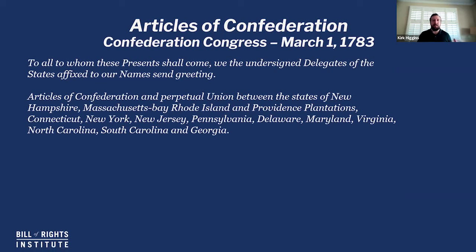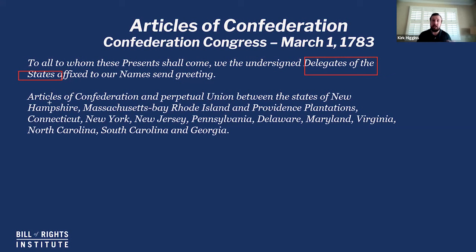The document starts with a fascinating preamble. If you remember the Constitution, there's the famous 'We the People of the United States.' Here we already see something different: 'To all to whom these presents shall come, we the undersigned delegates of the states affixed to our names send greetings.' These are delegates of the states — not 'we the people.' It's not individuals voting on this, but the actual delegates of the states coming together to form this confederation at the state level.